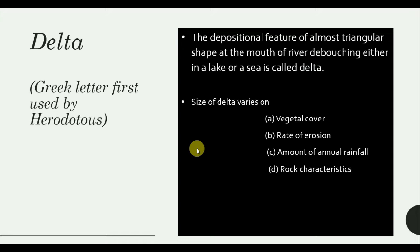Now how does a Delta form? Delta is basically a depositional feature which starts at the mouth of the river and deposits either in a lake or a sea. There are various sizes of Delta — some are pretty huge, some are not that large, some are very new — but properties like vegetation cover, rate of erosion, amount of annual rainfall, and rock characteristics pretty much control the size of a Delta.